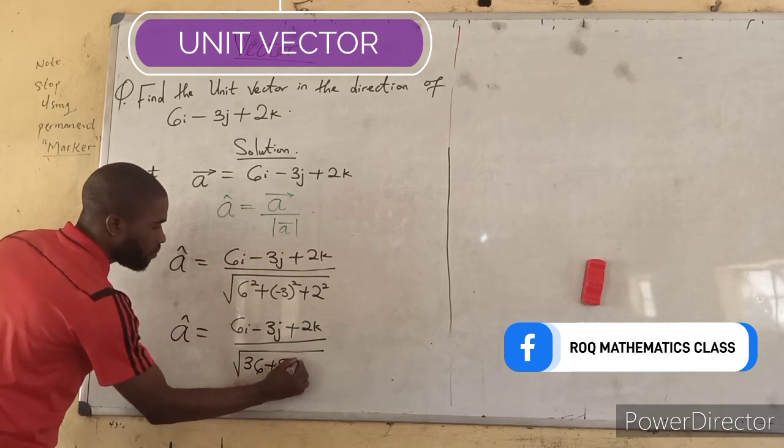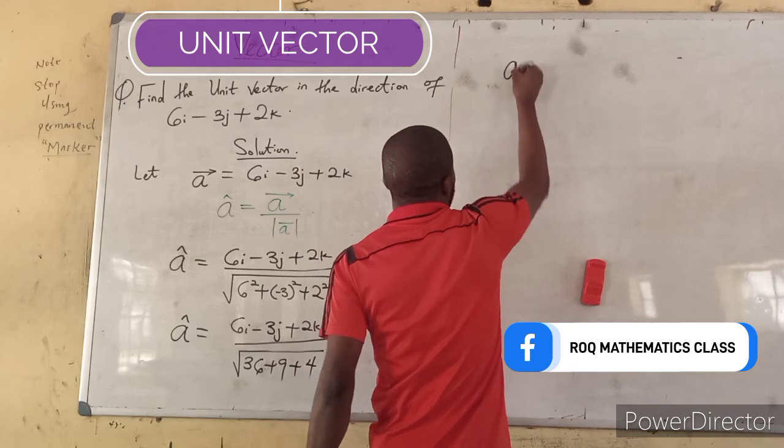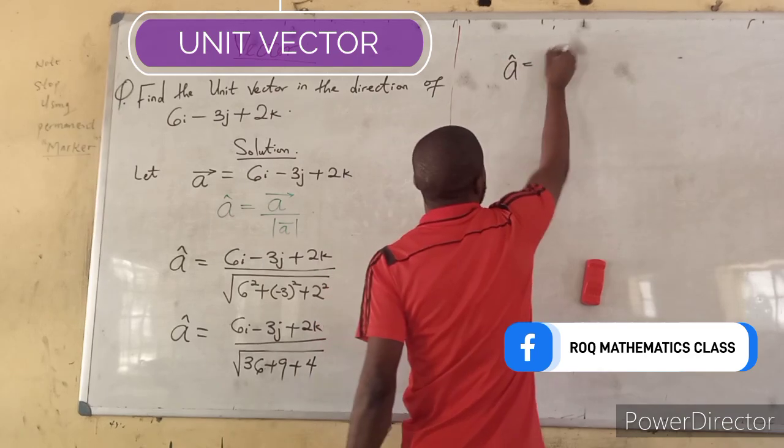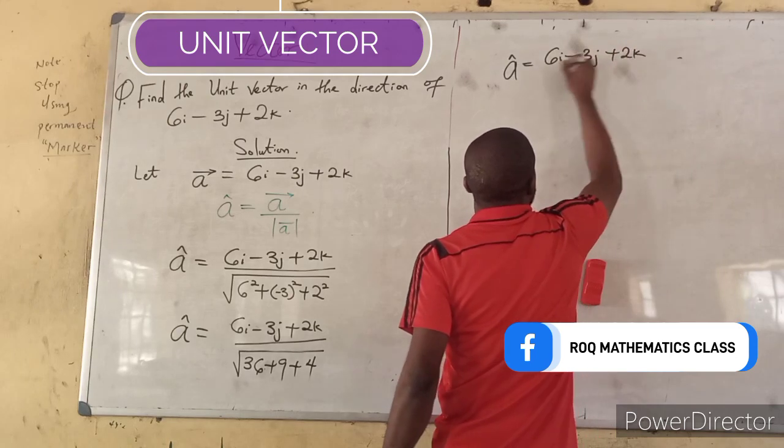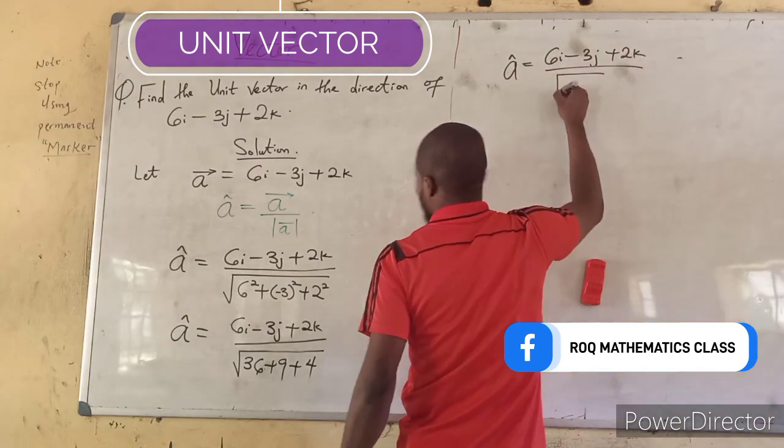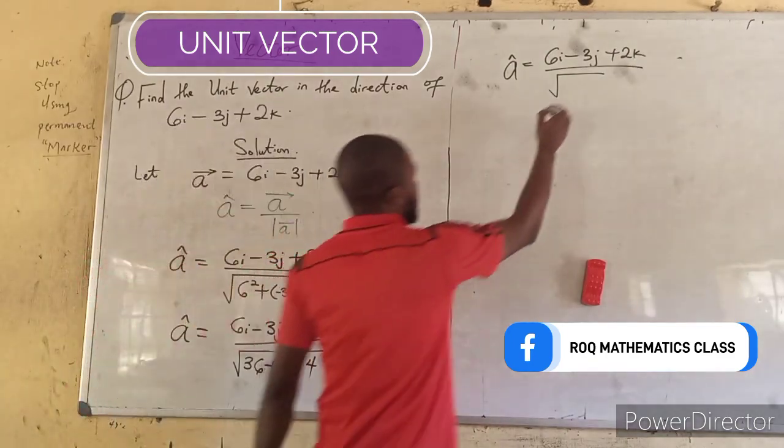Minus 3 square, 9, plus 2 square is 4. So, our unit vector a will now be 6i minus 3j plus 2k divided by square root of 36 plus 4, 40, plus 9. That is 49.